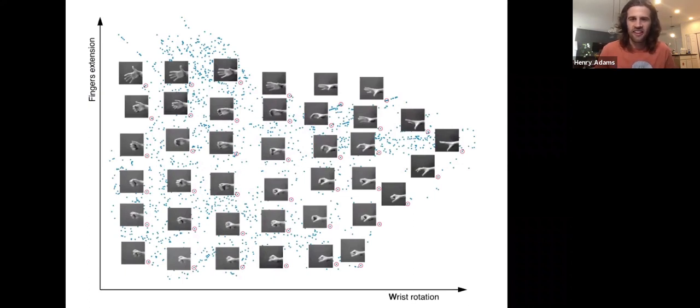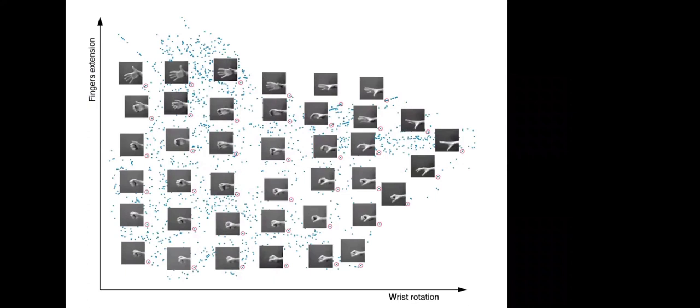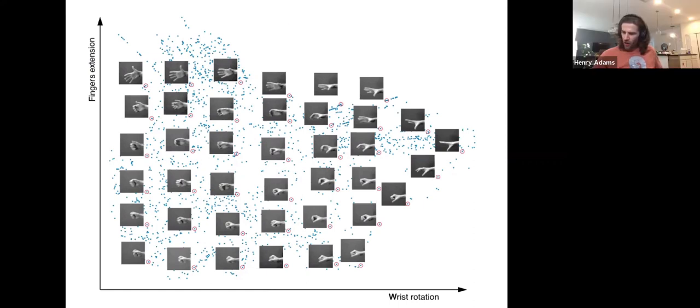Any questions? If I could just ask about kind of a general idea of how you could use this, is the idea that you have a data set and you can create this ISOMAP, and then if you got a new data point, you could put it on this coordinate plane and then measure finger extension and wrist rotation? Or do you somehow want to go the reverse direction? That's one thing you could do for sure. I would put this in the category of data visualization, for the most part, and I might say further exploratory data analysis.